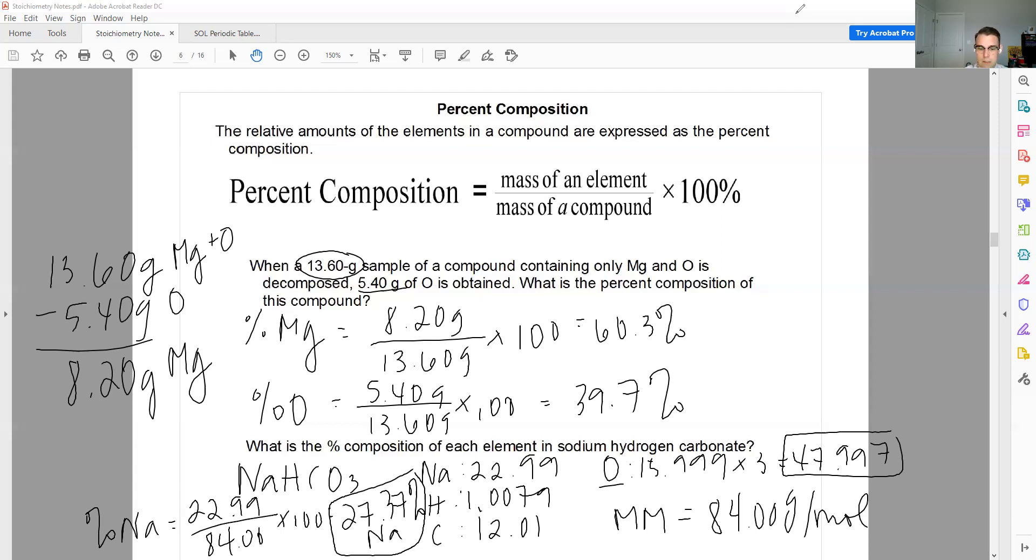So I'll just do the sodium and then ask you to do the other ones. The percent that sodium is going to be 22.99 divided by 84.00 multiplied by 100 and you're going to get 27.37% sodium. So just pause. Do hydrogen, carbon, and oxygen. Go check your answers. It's very simple stuff here. That's the easy one to do.